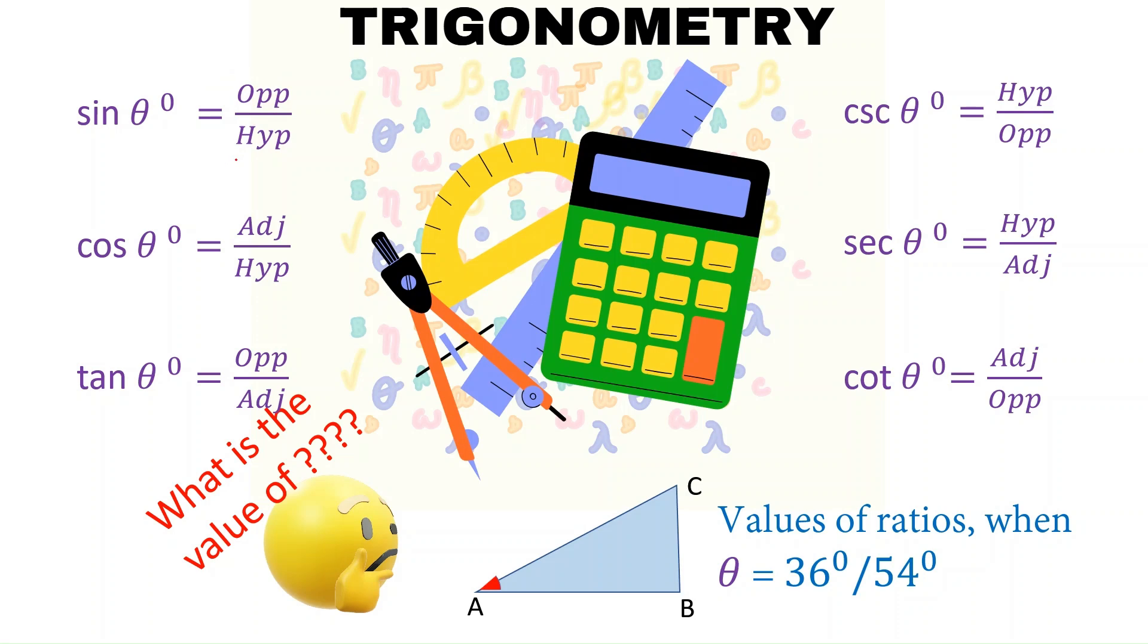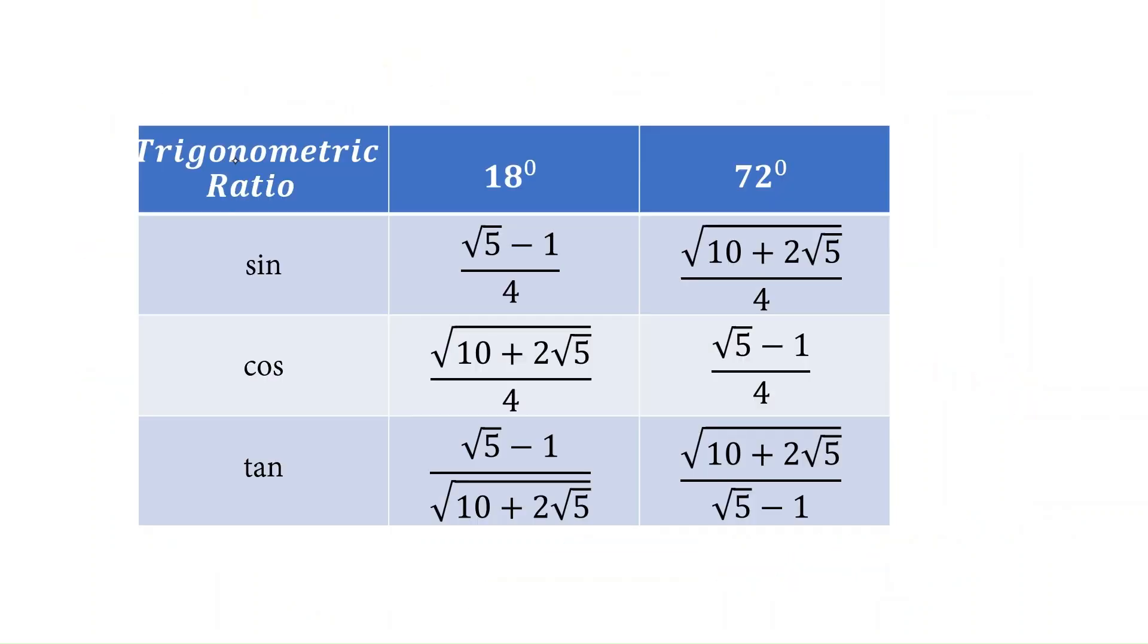In this session, we will see how to derive trigonometric ratios for angle 36 degrees and 54 degrees. In previous video, we have seen how to derive values for 18 degrees and 72 degrees. You can check the description for the link. I will use this 18 degrees to find the value for 54 degrees and 36 degrees.